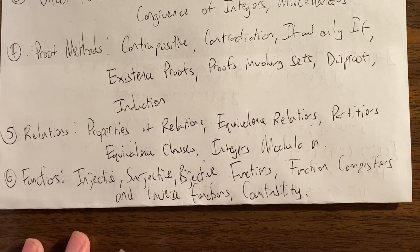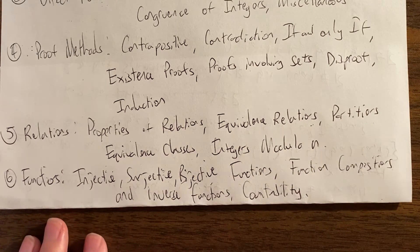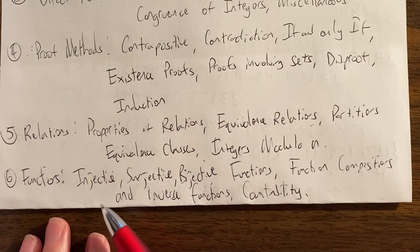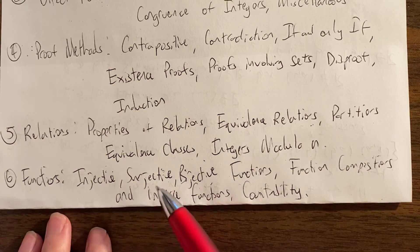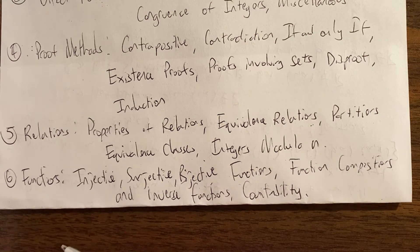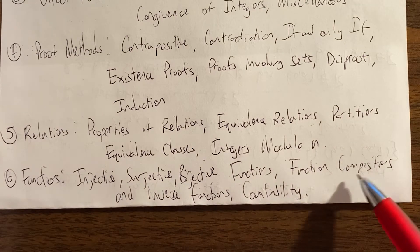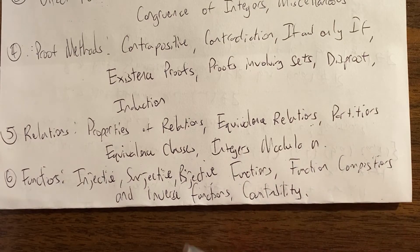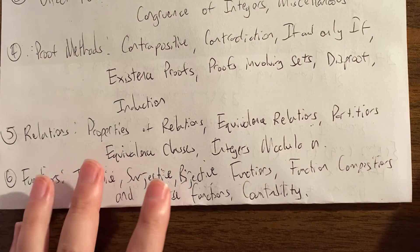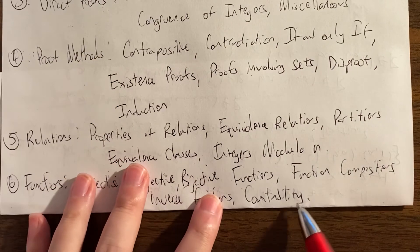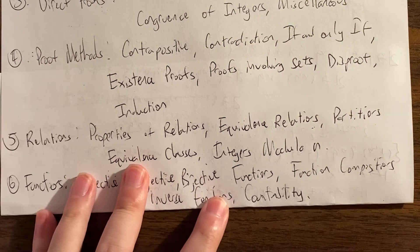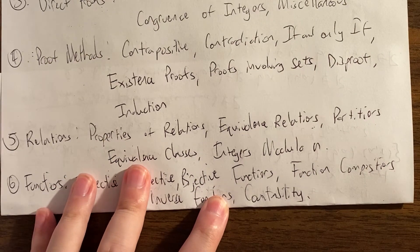Finally, we end our series on functions. We talk about the properties of functions, mainly being injective and surjective, which implies bijective. Then we talk about composition of functions and inverses. And finally, we end our series with a nice discussion of countability — countable infinite versus uncountable sets.